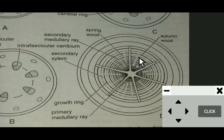One annual ring consists of one spring wood and one autumn wood. By counting annual rings, the age of the plant can be calculated. Autumn wood has narrow tracheids due to less requirement for translocation, while spring wood has broad tracheids due to the emergence of new leaves and branches requiring more water and nutrient transport.